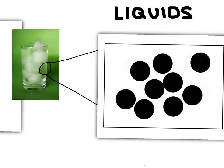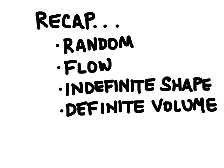To recap liquids: the motion of the particles is random, they're moving faster and have more kinetic energy, so they're able to flow past one another. But they don't have enough kinetic energy to break those attractive forces. They have an indefinite shape — meaning they'll take on the shape of their container — but they do have a definite volume.